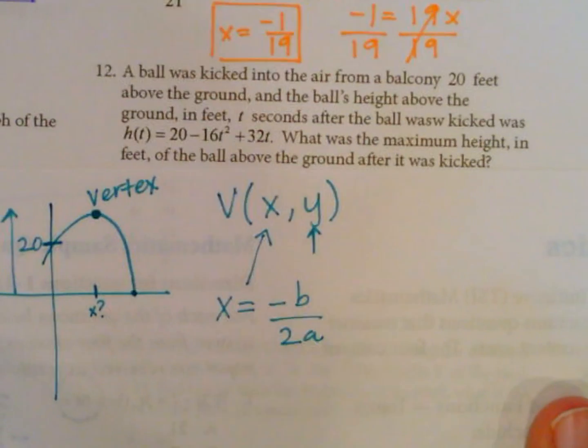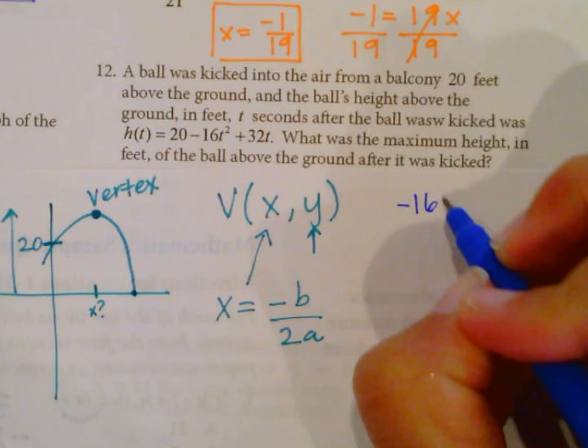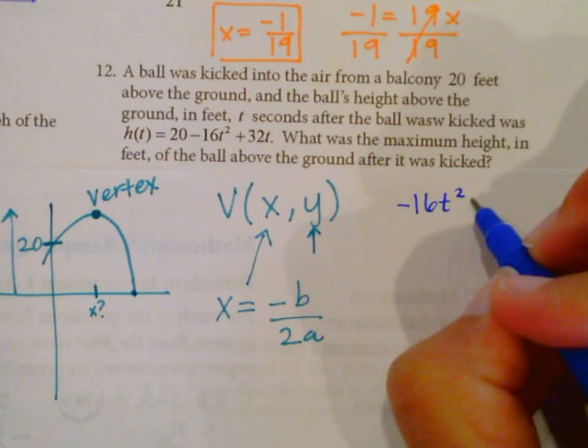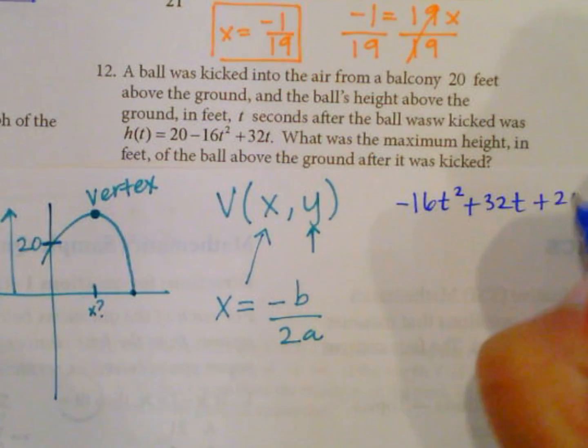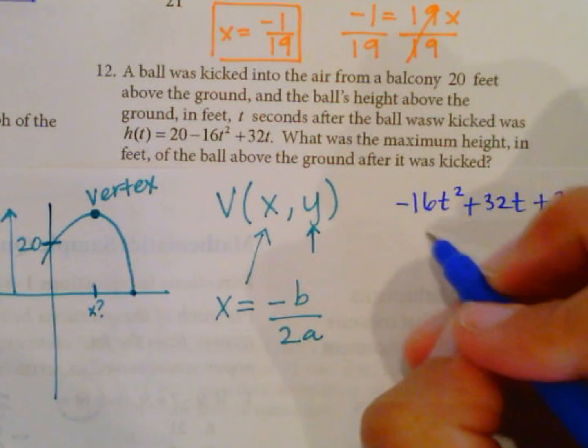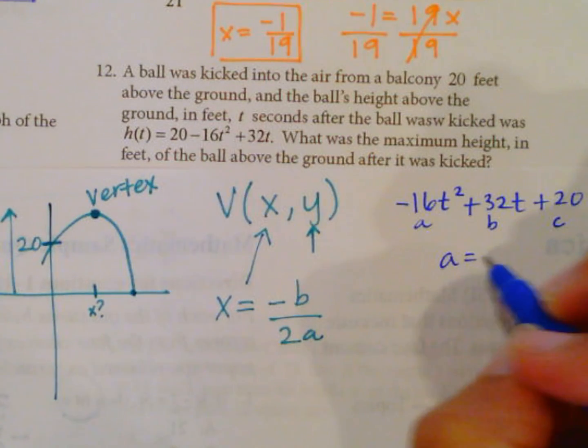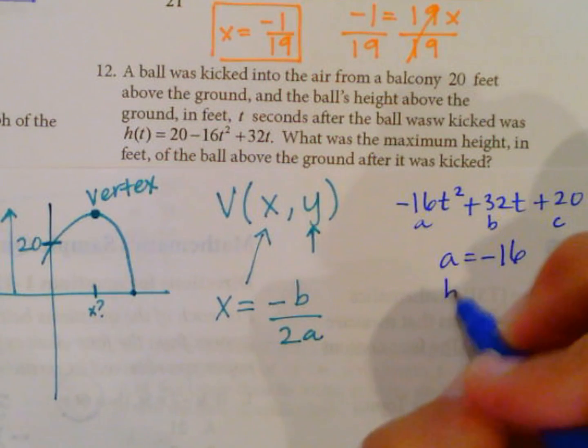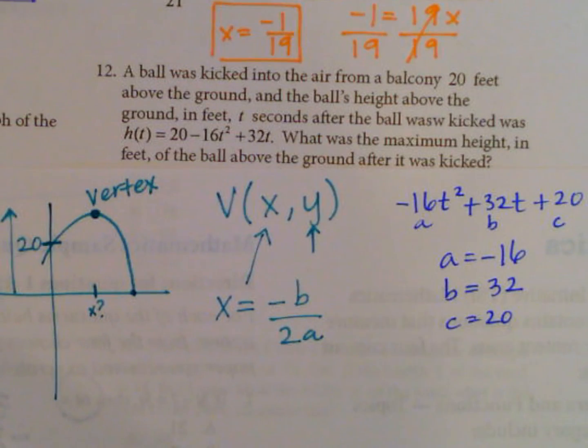Let's go ahead and solve for that. Keep in mind we need to rewrite this in standard form, so this is negative 16t squared plus 32t plus 20. So my a value, b value, and c value are here. So a equals negative 16, b equals positive 32, and c equals 20, but we don't need that for this particular problem.